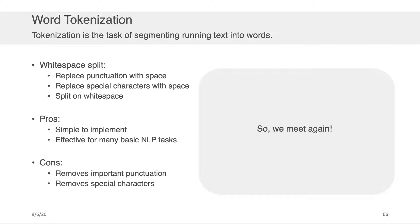Tokenization is just the task of segmenting your text into a set of words. The simplest way you can do that is with a white space split. So a typical approach here for white space splitting is to take a sentence like the one we see on the right hand side. So, we meet again, identifying where all the punctuation and special characters are, there's a comma and an exclamation mark in this case, replacing those with white space and then splitting everywhere where we see a white space character.